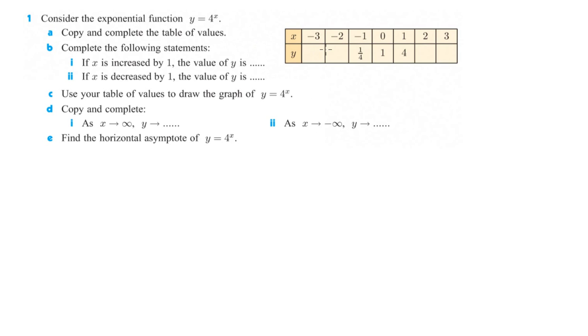Copy and complete the table of values. So first thing, 4 to the x. If we plug in negative 3 for x, we'll end up getting a value. They've already given us negative 1, 0, 1. Then we also figure out 2 and 3.